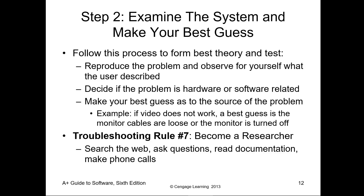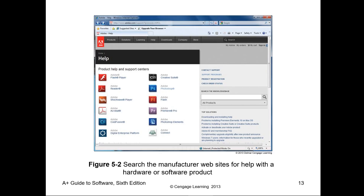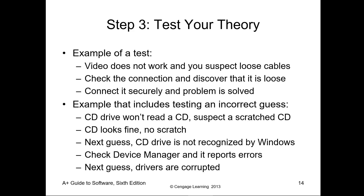Rule seven: become a researcher. See what documentation is out there. See what information is in the tickets. Maybe look at the manufacturer's website or check forums for those hardware products. Don't be afraid to use manufacturer's websites for help, whether it be hardware or software. Step three: test your theories. Test your best theories. If one theory doesn't work, test your second, third, or fourth. If they still don't work, go back and find more theories.